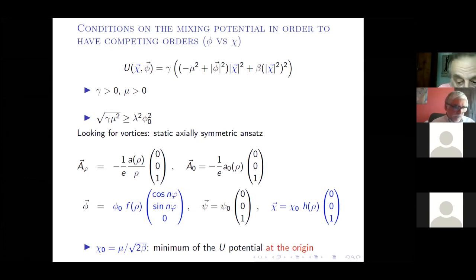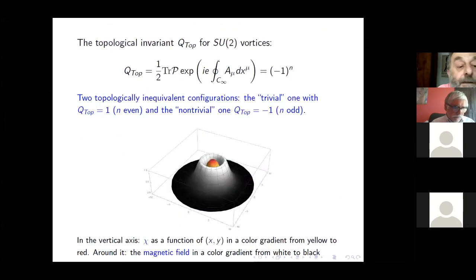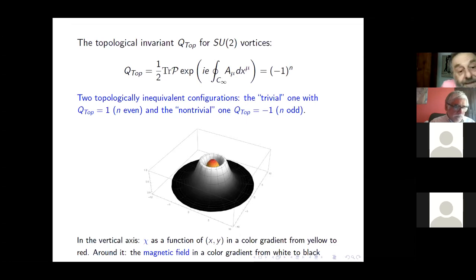And chi zero is the minimum of the potential that I introduced. If you want to compute the topological charge, you can do in different ways, for example as Polyakov and t'Hooft did for the monopole. But I think it's better to use the Wilson loop. And you remember that in the ansatz for the gauge field there was an n cosine n, sine n. This is the n that is in the formula in the right hand side.